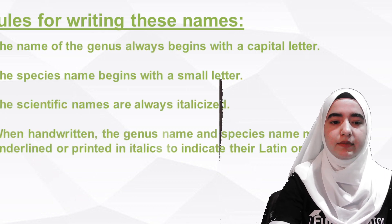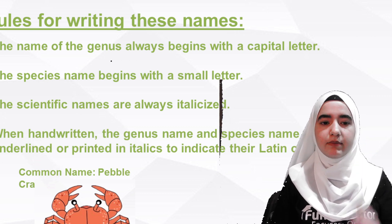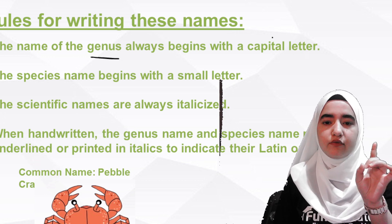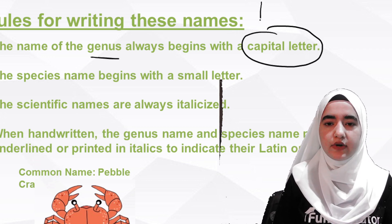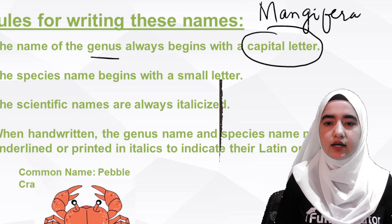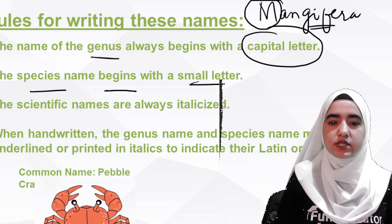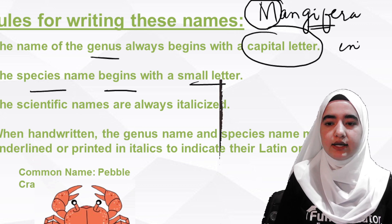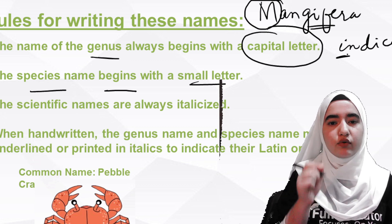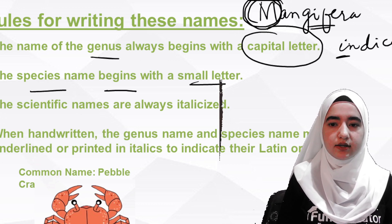Now let's see some rules for writing scientific names. The first term of a biological name is the genus, and its first letter is capitalized. For example, mango's scientific name is Mangifera indica — Mangifera starts with a capital letter. The species name begins with a small letter, so indica is written in lowercase.